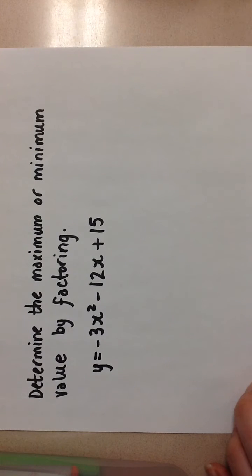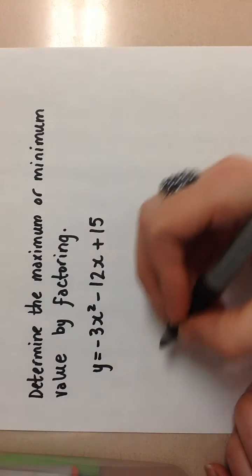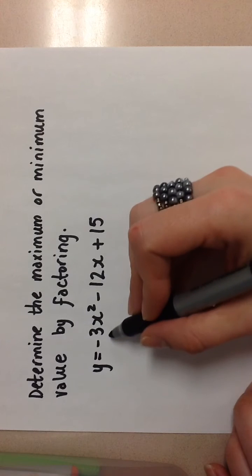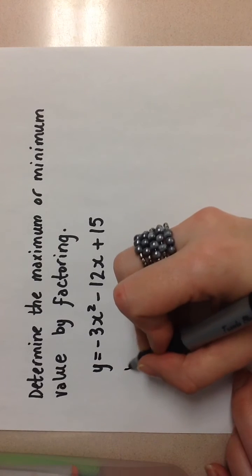Here we have to find the maximum or minimum value of this quadratic equation by factoring. So first we see that there's a common factor of negative 3,